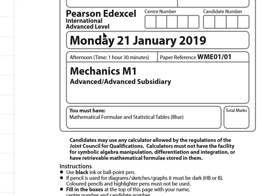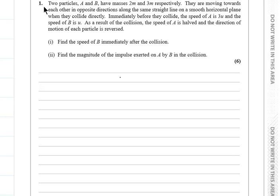Assalamu alaikum, I'm Dr. Raeel Mohamad, PhD in Applied Mathematics from Egypt. Now we are going to solve Edexcel International A-Level Mechanics 1, Jan 19 paper. Let's start. Question 1: Two particles A and B have masses 2m and 3m respectively. They are moving towards each other in opposite directions along the same straight line on a smooth horizontal plane when they collide directly.